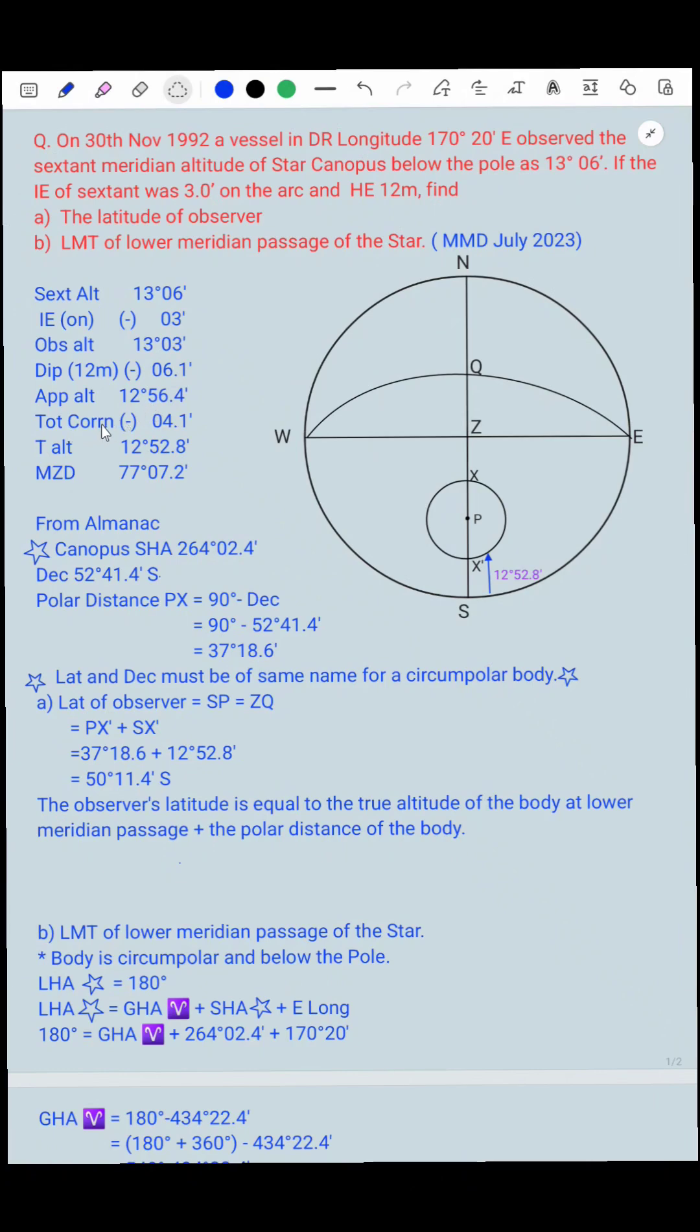Now we apply total correction and this is by referring from the Nautical Almanac pages, so total correction is 4.1 minutes. After subtracting we got true altitude as 12 degrees 52.8 minutes. And 90 degrees minus true altitude is equal to MZD, which is 77 degrees 07.2 minutes.